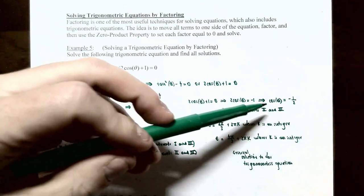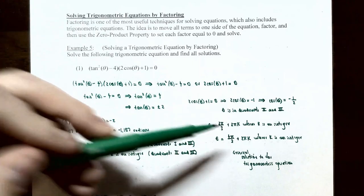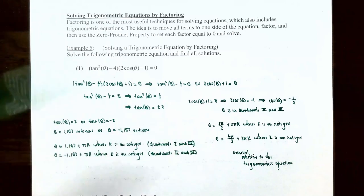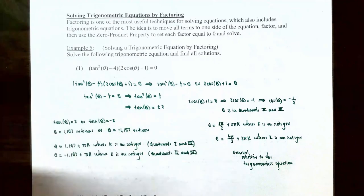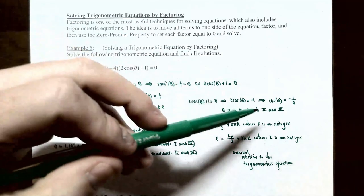We also have the equation cosθ = −1/2. Cosine is negative in quadrants 2 and 3, so we need to find angles in those quadrants. The angle in quadrant 2 where cosθ = −1/2 is θ = 2π/3, giving the general solution θ = 2π/3 + 2πk. The angle in quadrant 3 is θ = 4π/3, giving the general solution θ = 4π/3 + 2πk where k is an integer.